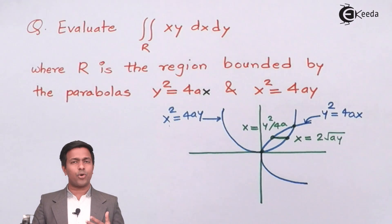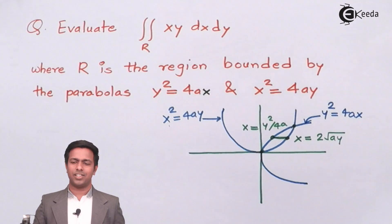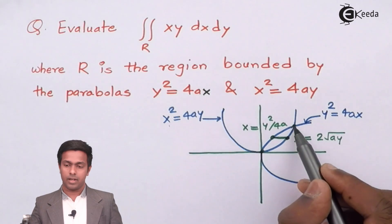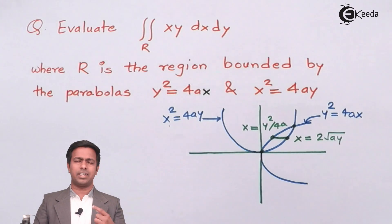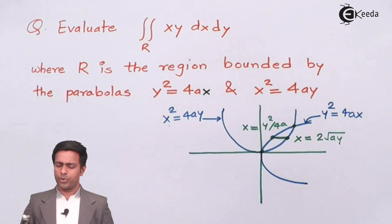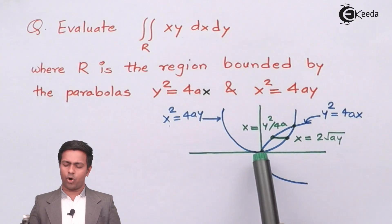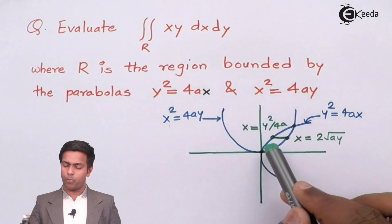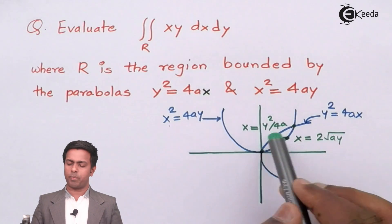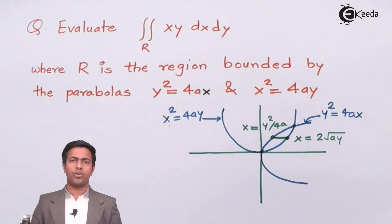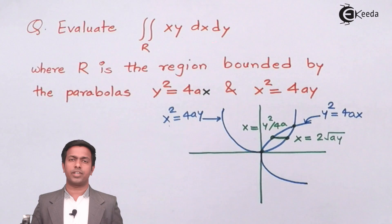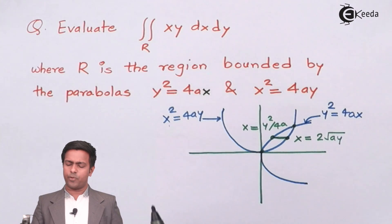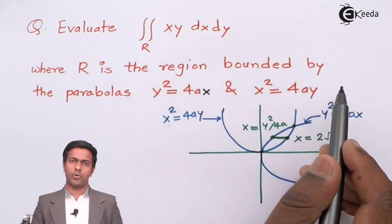The two extreme positions of the strip correspond to the two points of intersection of the parabolas. To find these, we substitute the equation of one curve into the other.